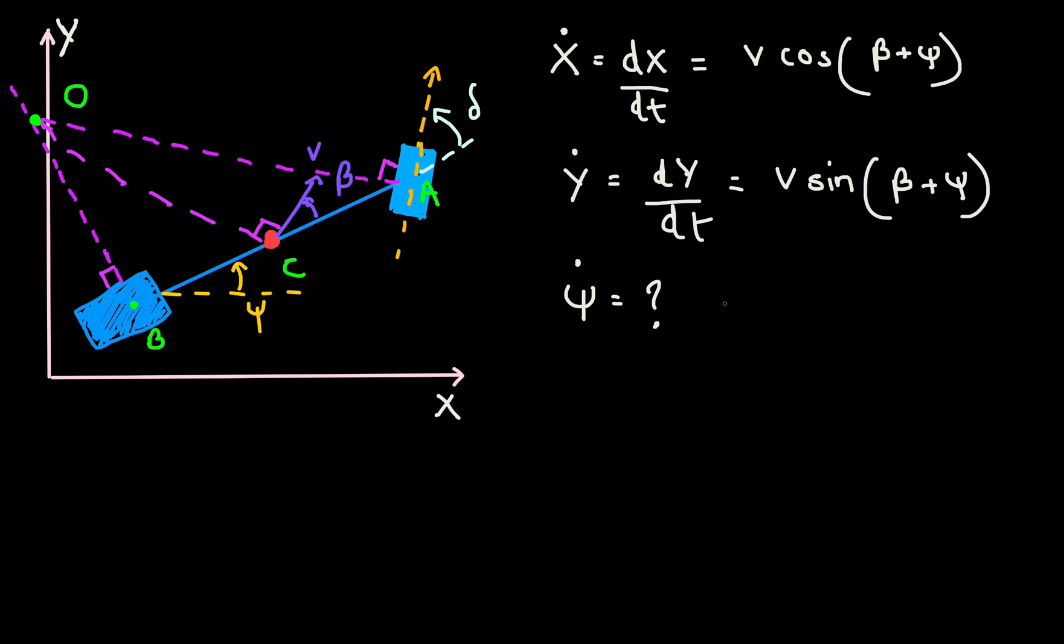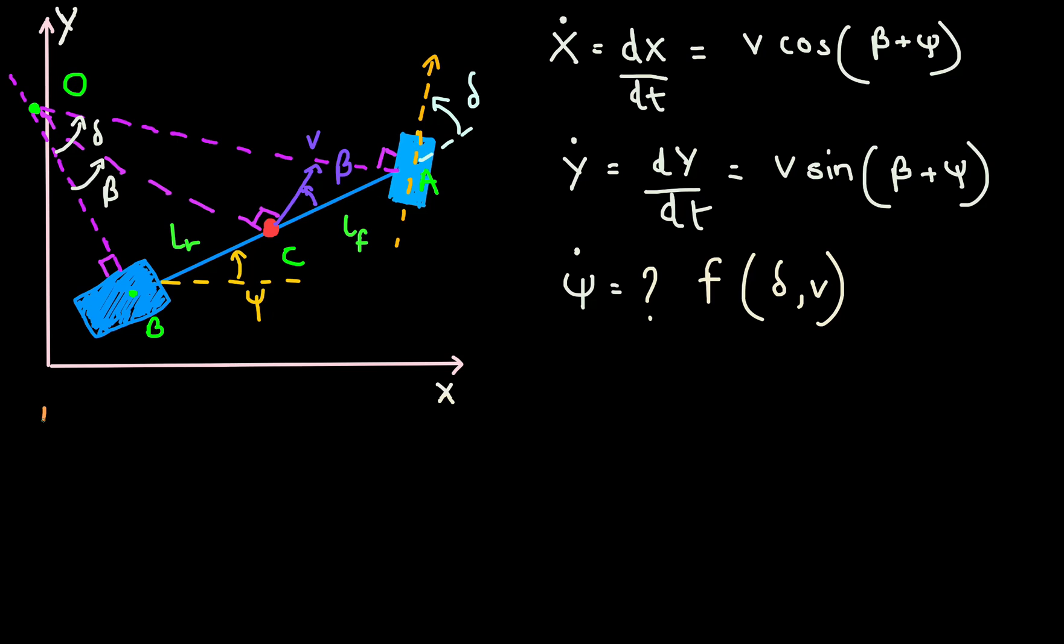Now let's look at how the heading angle varies, that is psi dot. This is not super straightforward. We will have to do some trigonometry to get there. Let's do that. If you look at triangle OAB, high school geometry tells us that the angle at the vertex O is delta. So if we divide the length AB by the length OB, that should be equal to tan of delta. And I can express AB as LF plus LR which is the wheelbase. I get tan delta equals LF plus LR by OB.